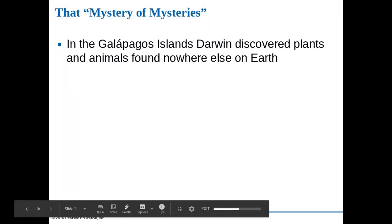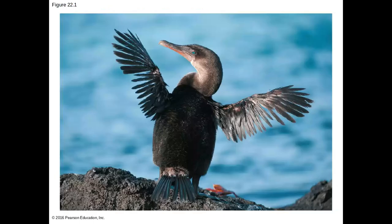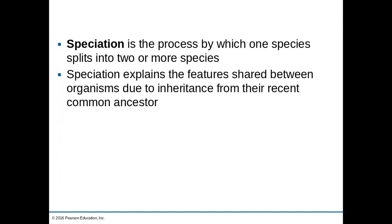As you recall, Darwin, when he's visiting the Galapagos Islands, realized that there were many plants and animals on these islands that were not found anywhere else on Earth. So where could this come from? We now have a study of this idea, which is called speciation — the process by which one species ends up turning into two or more species.